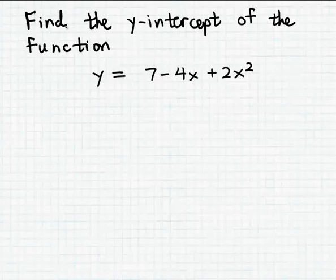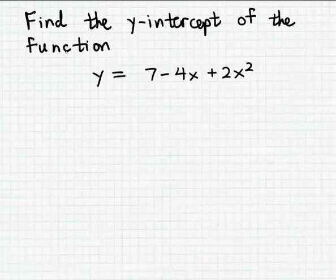In this problem, we want to find the y-intercept of the function y = 7 - 4x + 2x². Now this is a quadratic function, but that's not really important to finding the y-intercept of the function because